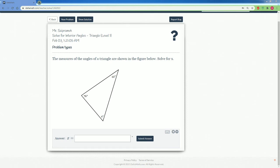Welcome to the Delta Math solution tutorial. Here we have solving for the interior angles of a triangle, level 1. The question asks: the measurements of the angles of a triangle are shown in the figure below, solve for X.